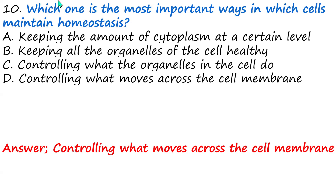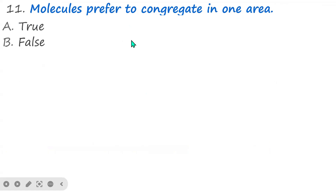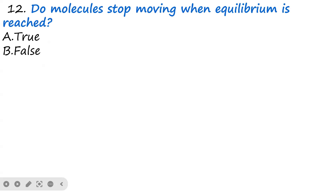Question eleven: Do molecules prepare to congregate in one area? The answer is false — molecules do not always gather in one area. They move in and out of cells to maintain equilibrium. Question twelve: Do molecules stop moving when equilibrium is reached? The answer is true. Once equilibrium is reached, the concentration inside and outside the cell are equal and the molecules stop net movement.